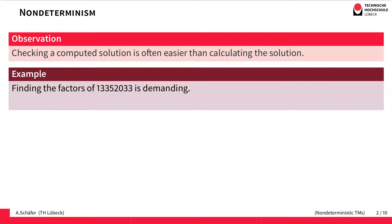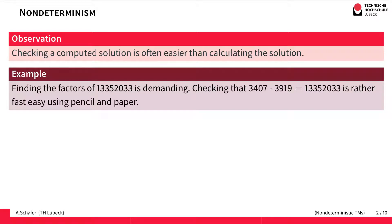Consider this number here. Finding the factors of this number is quite demanding. However, if I tell you that the two factors are 3407 and 3919, it's rather easy for you to compute the product simply using pencil and paper.